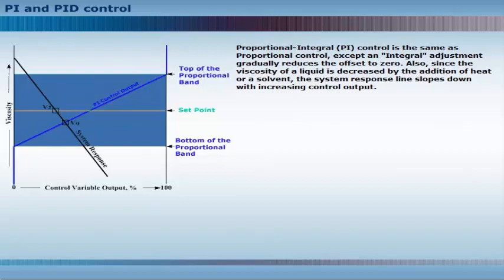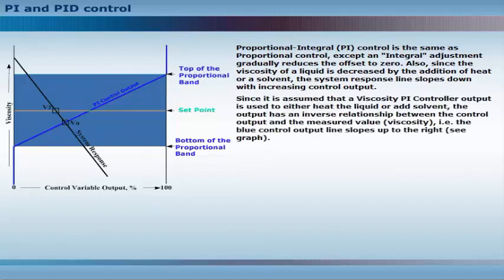Also, since the viscosity of a liquid is decreased by the addition of heat or a solvent, the system response line slopes down with increasing control output. Since it is assumed that a viscosity PI controller output is used to either heat the liquid or add solvent, the output has an inverse relationship between the control output and the measured value, i.e., the blue control output line slopes up to the right.